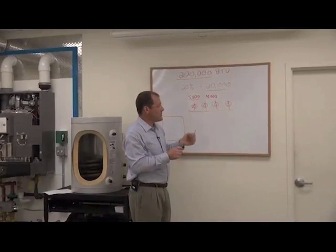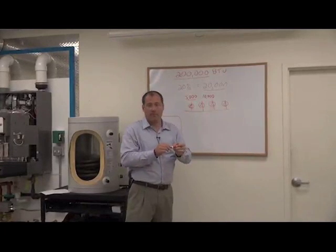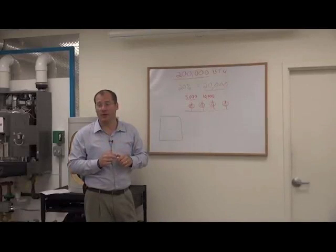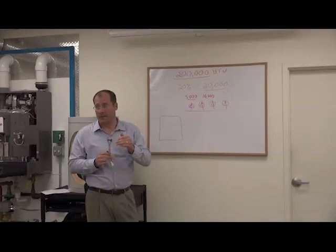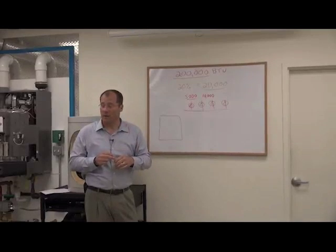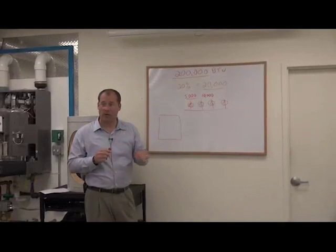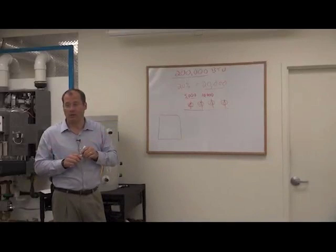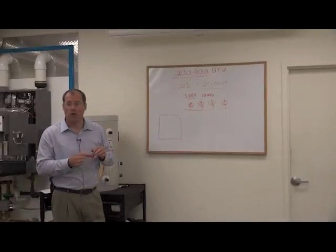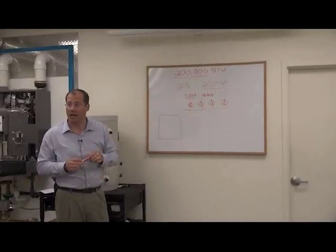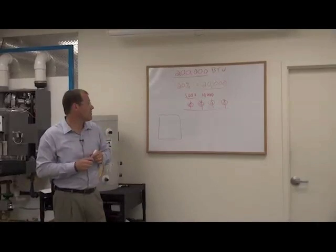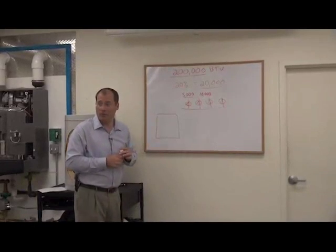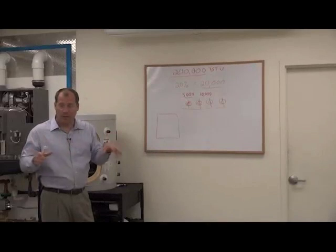So some contractors will use a rule of thumb. I'll use 40 BTUs per square foot. That's still a guess. And they say, well, I can add up all of the baseboard and all the radiators, and that's better because that's the connected load. You can determine how much heat could be put into the house, but it's still not the best way.